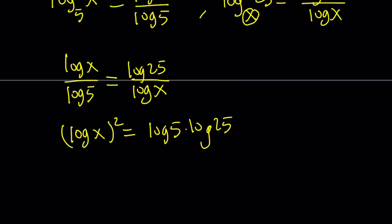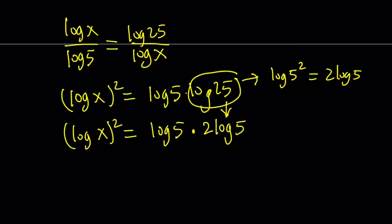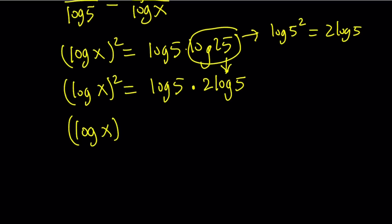And in this case, we can do the following. We can write log 25 as log 5 squared, and that is 2 log 5 by using the power property. So we can write this as 2 log 5. And when you multiply log 5 by 2 log 5, you get 2 times log 5 squared. So we kind of have squares on both sides. 2 is not a perfect square. But we can take the square root and use the absolute value. So this is going to give us two results.